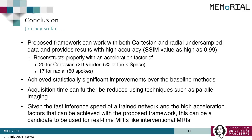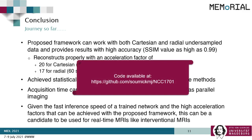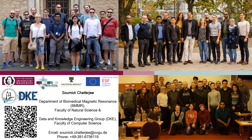To conclude, the proposed NCC1701 framework can work with both Cartesian and radial under-sampled data for acceleration factors as high as 20 and 17 respectively, and provides results with high accuracy while achieving statistically significant improvements over the baselines. It is to be noted that acquisition time can be further reduced by using techniques such as parallel imaging. Given the fast inference speed of a trained network and these acceleration factors, this proposed framework can be a candidate for real-time MRIs like interventional MRIs. The code of this project is available publicly on GitHub. Thank you so much for your attention and feel free to contact me for any questions or feedback.